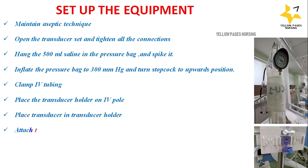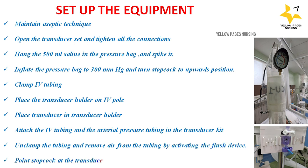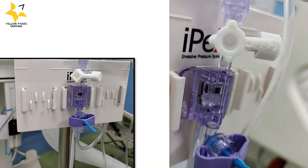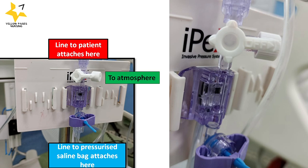Clamp the IV tubing, place the transducer holder on the IV pole, and place the transducer in the transducer holder. Attach the IV tubing and the arterial pressure tubing from the transducer kit. Unclamp the tubing and remove air by activating the flush device. Point the stopcock at the transducer horizontal and clamp the tube wings. The upper part of the setup connects to the arterial line of the patient and the lower part connects to the pressurized saline bag.